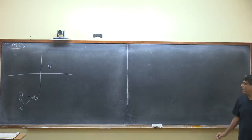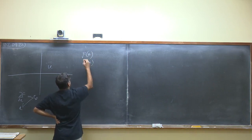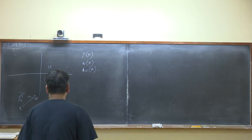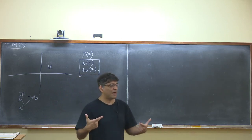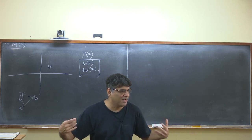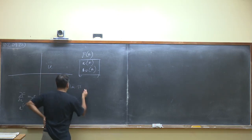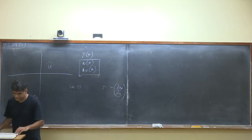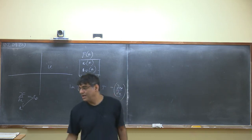Our goal was to compute this prepotential F of U, equivalently to compute A(U) and A_D(U). The metric for the gauge field, also the moduli space metric, was Im(τ), where τ was equal to dA_D/dA.